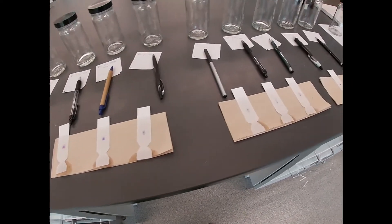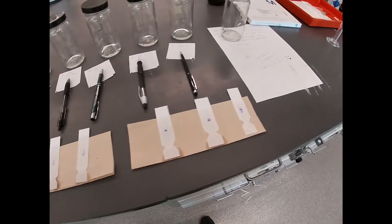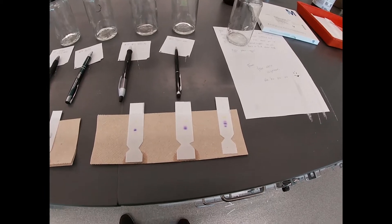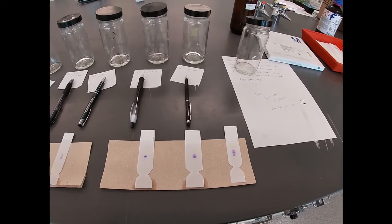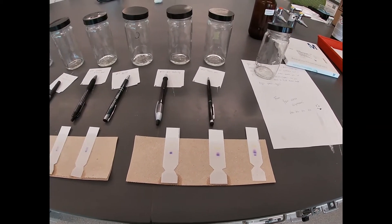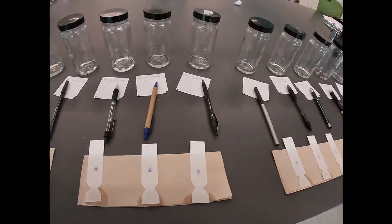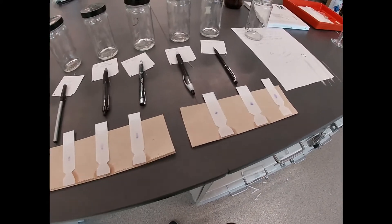So we have our solvent front marked on each of these. Now we're letting them dry, and we'll do some measurements to get our RF factors. Meanwhile I'm going to use the Sharpie up at the very top of each of these to put the number actually on them.